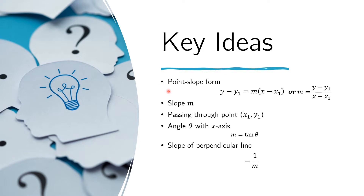Let us recall the following. The point-slope form of a line on the xy-plane has slope m and passes through the point (x₁, y₁). Furthermore, if the angle that this line makes with the positive x-axis is theta, then the slope equals the tangent of theta. The line perpendicular to this line will have a slope of negative 1 over m.